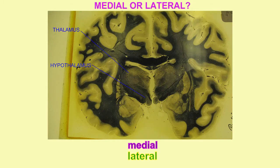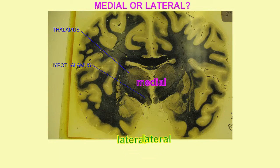In the brain, the two lobes of the thalamus are close to the midline — they are medial — while portions of the cerebral cortex, like the olfactory cortex, would be lateral to that.